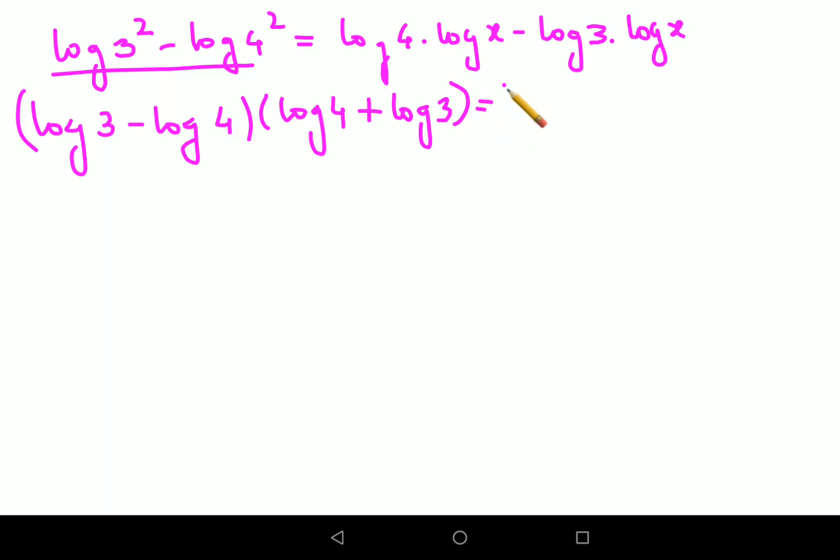Now here we can take log x common, and I'm left with log 4 minus log 3. So we'll divide both sides by log 4 minus log 3.